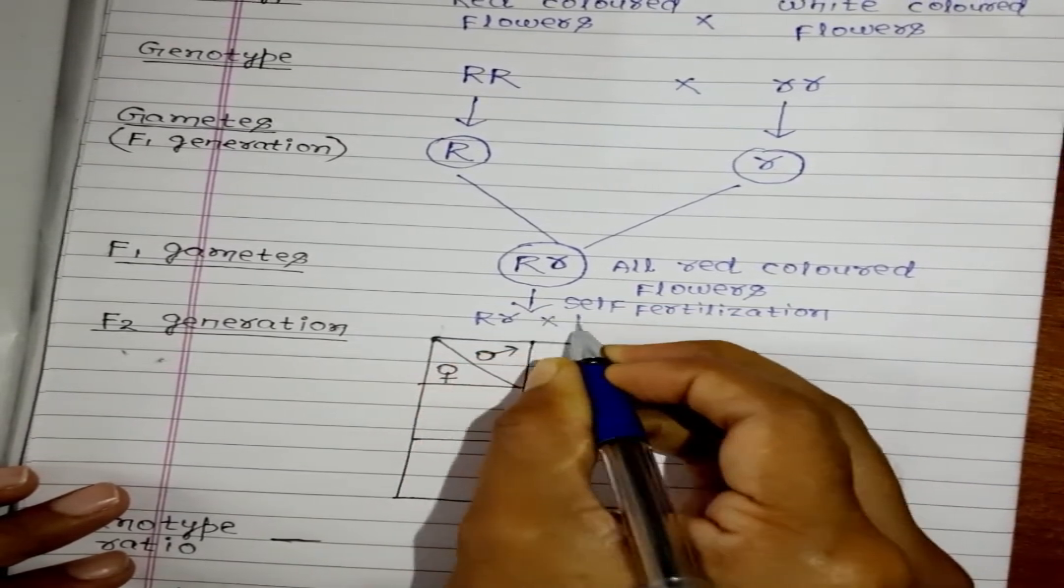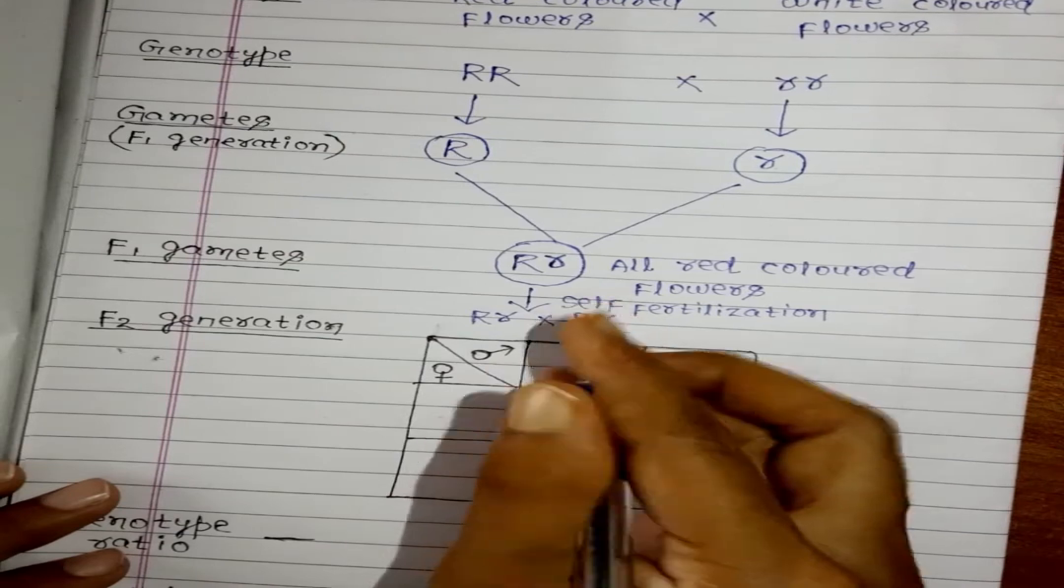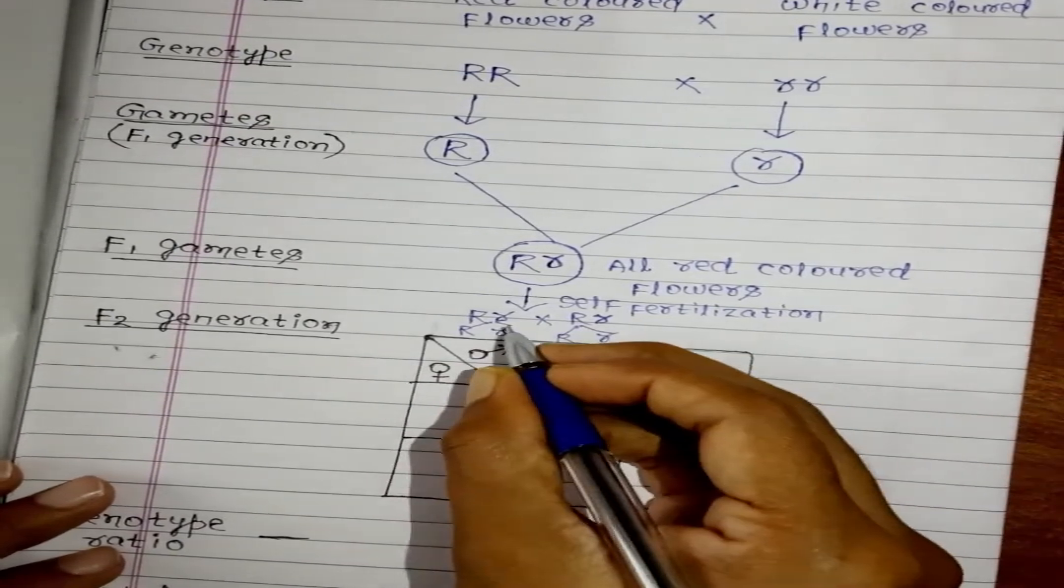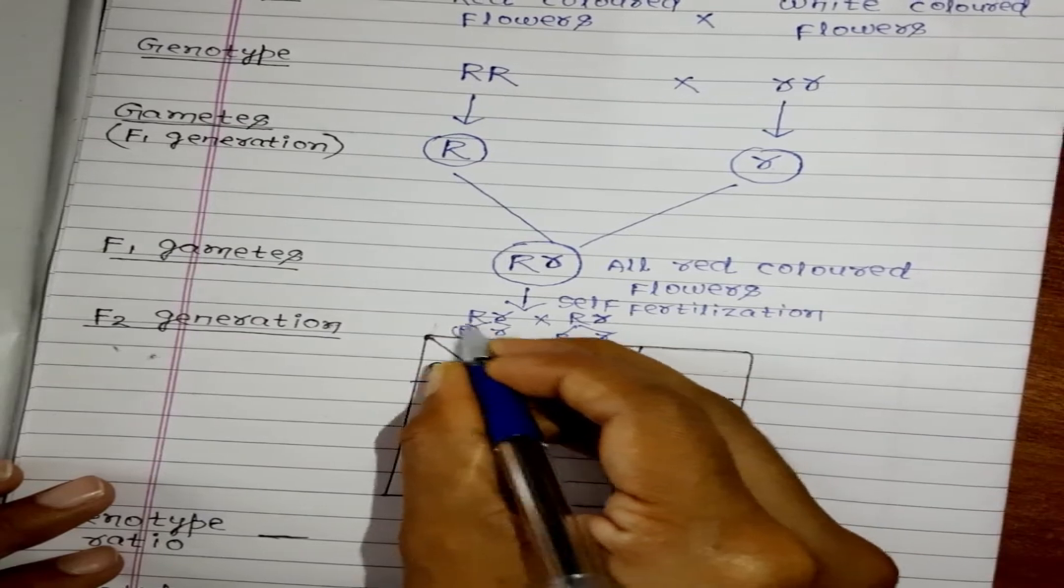R, R. So two will be formed - capital R small r, capital R small r.